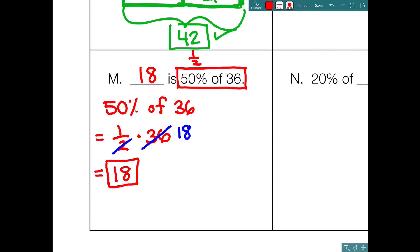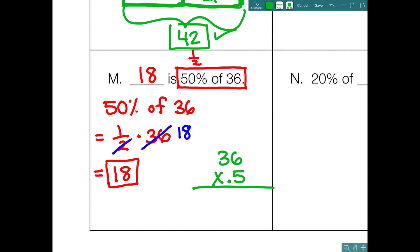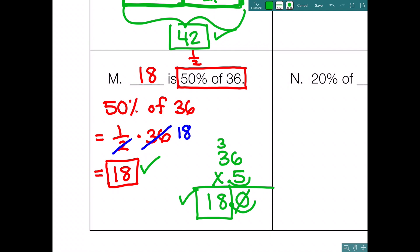You could also solve it using a decimal. Write down 36 times 0.5: 6 times 5 is 30; 5 times 3 is 15, plus 3 more gives 18. Move the decimal the correct number of places and drop the trailing zero. Final answer is 18, which matches the answer from the fraction method. So 18 really is 50% of 36.